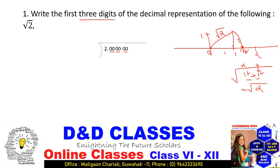For 2, we first calculate what number multiplied by itself gives 2. If you multiply 2 into 2 you get 4, which is greater than 2, so we multiply 1 into 1. Now subtract 1 from 2 - we get remainder 1. Put the point here and bring down the first pair of zeros - now we have 100.